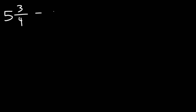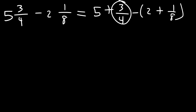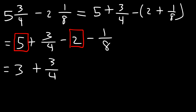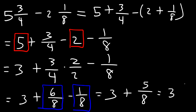What if we have two mixed numbers with different denominators? First, let's expand: 5 plus 3 over 4 minus 2 plus 1 over 8. We need common denominators, but let's begin by distributing the negative sign: 5 plus 3 over 4 minus 2 minus 1 over 8. Combining 5 and negative 2 gives 3. To change the denominator 4 into 8, multiply 3 over 4 by 2 over 2, giving 6 over 8. Now 6 over 8 minus 1 over 8 is 5 over 8. The final answer is 3 and 5 eighths.